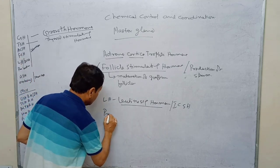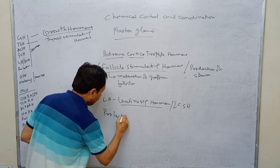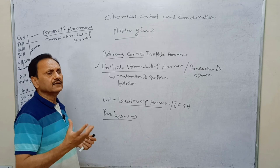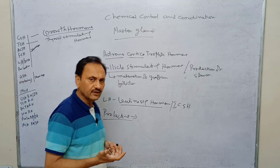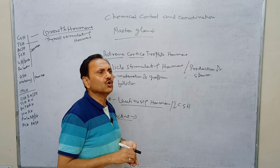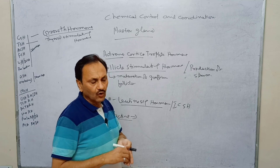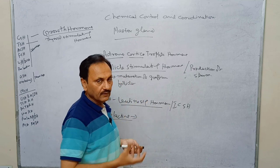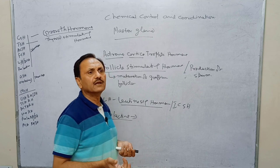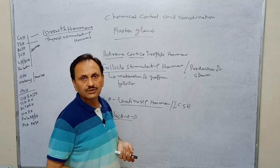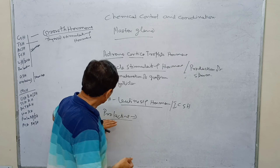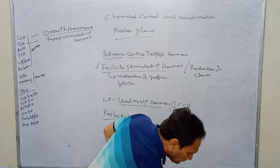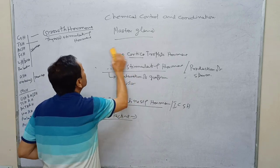Prolactin is also a hormone released from the anterior lobe. It is mainly responsible for the growth of the mammary gland, the formation of milk, and increasing the storage of milk after parturition. It is only present in females. This covers all six hormones present in the anterior lobe of the pituitary.